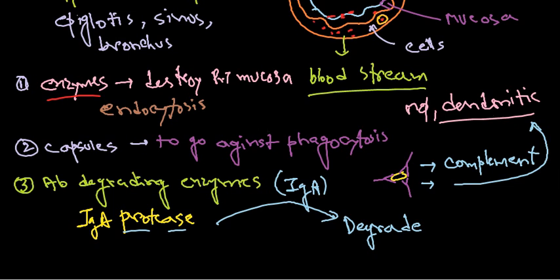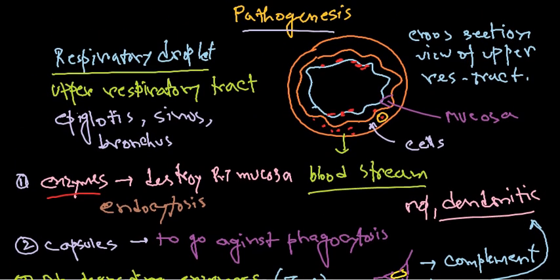In most cases the infections are mild — epiglottitis, sinusitis, bronchopneumonia — but the most severe form is meningitis. We must be careful to detect infection early because once the mucosa is compromised, it becomes vulnerable to not only this bacteria but other bacteria as well.